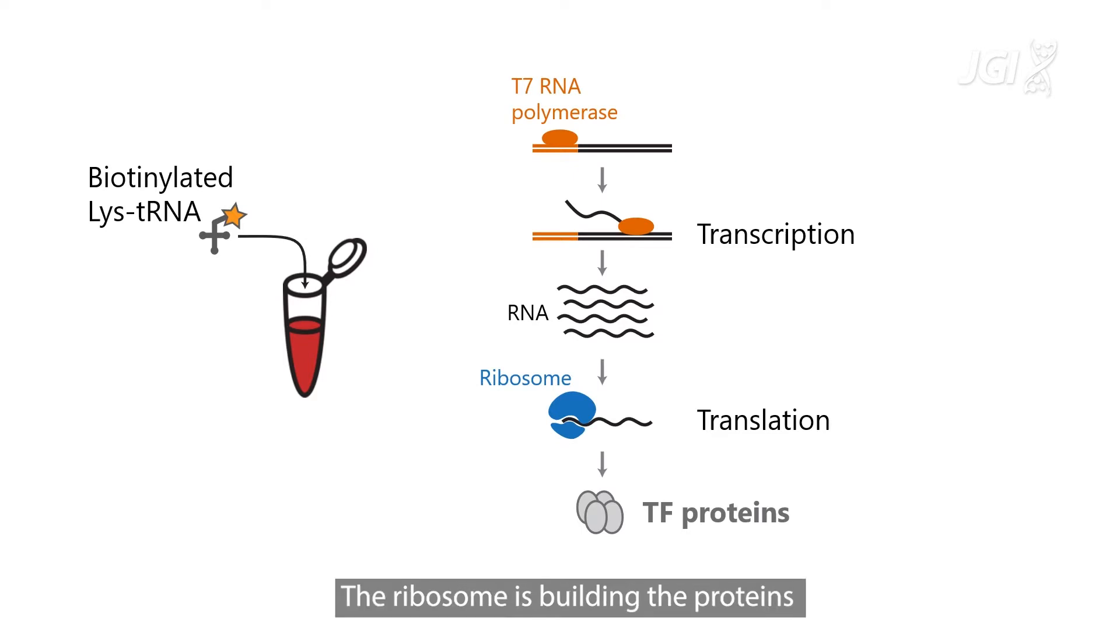The ribosome is building the proteins based on the RNA code, one amino acid at a time. And each time the code calls for a lysine amino acid, there's a chance that a biotinylated lysine gets incorporated instead. In this way, we end up with transcription factor proteins that are decorated with biotin tags.